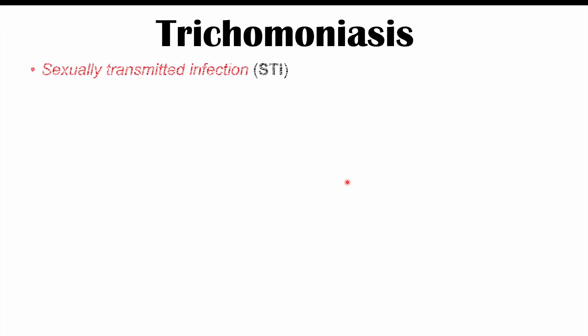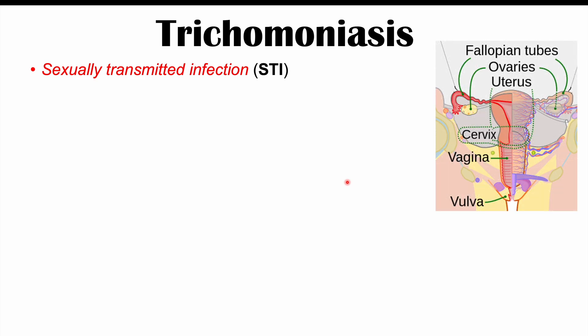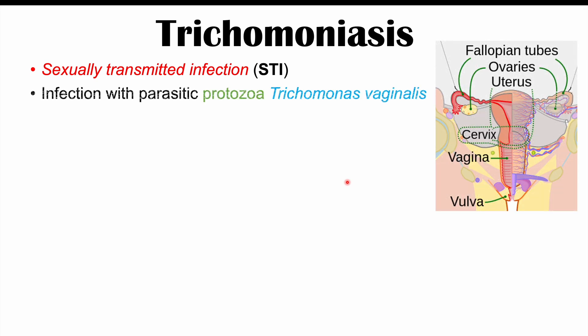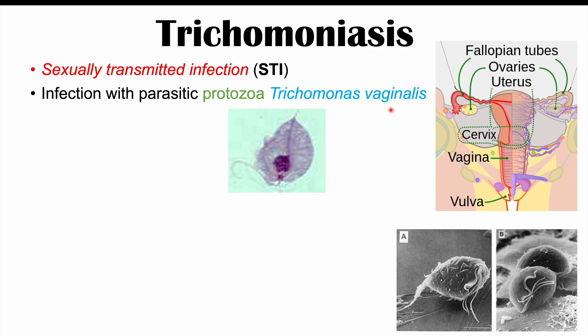Trichomoniasis is a sexually transmitted infection, or STI, due to an infection with a parasitic protozoa known as Trichomonas vaginalis. This is a single-celled organism with a nucleus, about the size of a white blood cell, and it has four flagella — whip-like tails that allow it to move around, providing motility to these organisms.